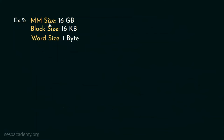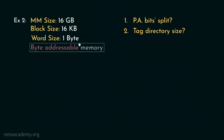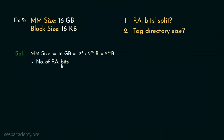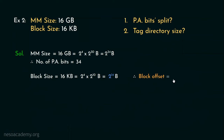Consider example number 2: main memory size is 16GB, block size is 16KB, and word size is 1 byte — again a byte-addressable memory. 16 is 2 to the power 4 and gigabytes is 2 to the power 30, so the main memory size is 2 to the power 34 bytes, giving 34 physical address bits. The block size is 16KB: 16 is 2 to the power 4 and kilobytes is 2 to the power 10, so block size is 2 to the power 14 bytes and the block offset is 14 bits.